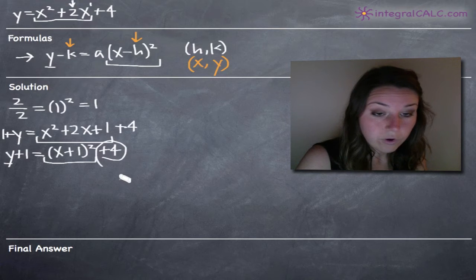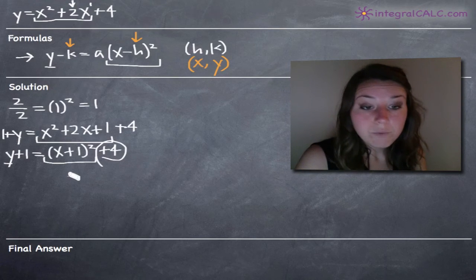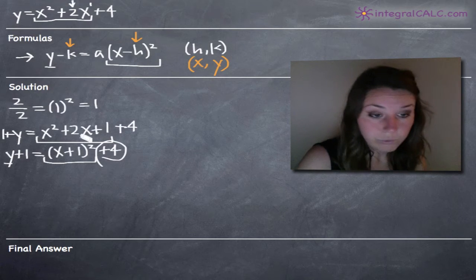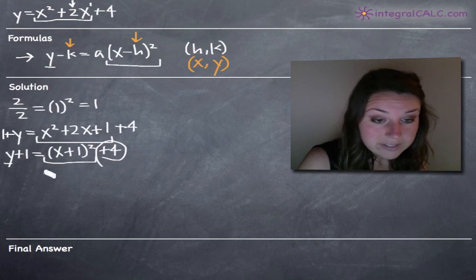Notice that in our formula, we don't have any constants on the right-hand side, but in our equation we've got this plus four over here on the right. So we want to move that over to the left so we match the formula that we're trying to move toward.